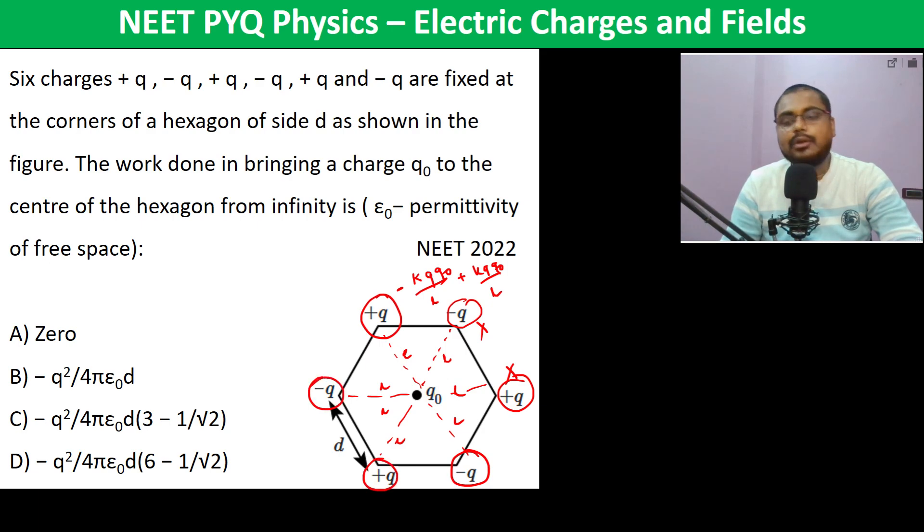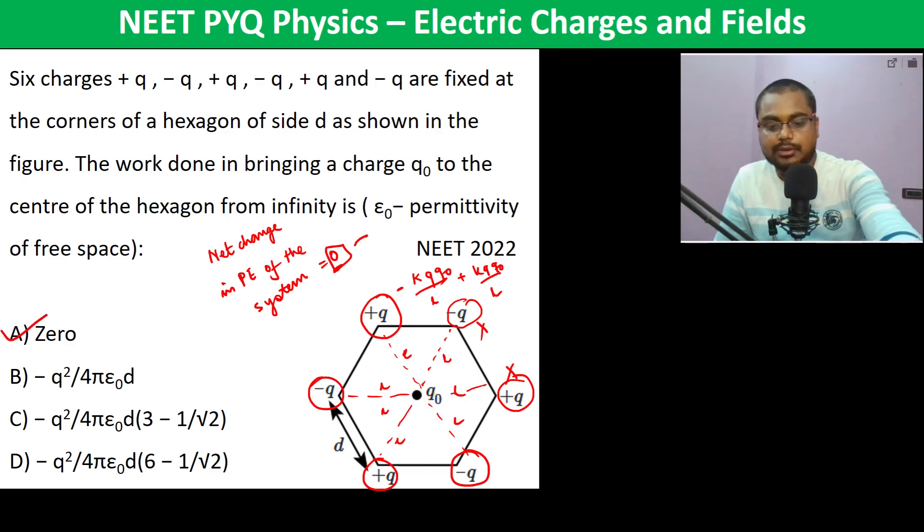Therefore, the net change in potential energy of the system becomes zero. So A is the answer.